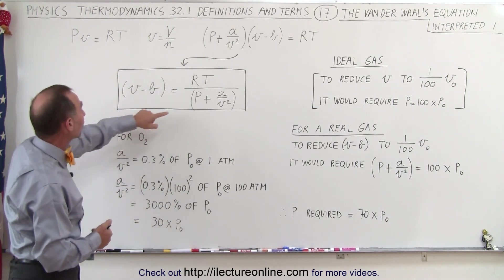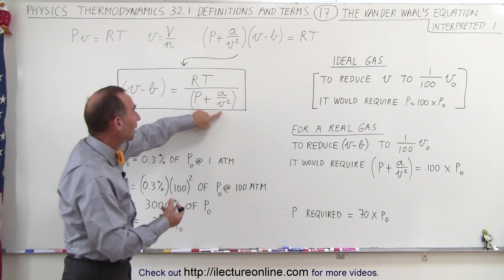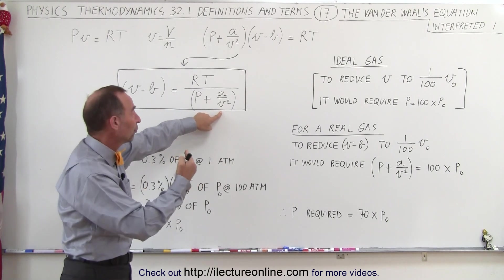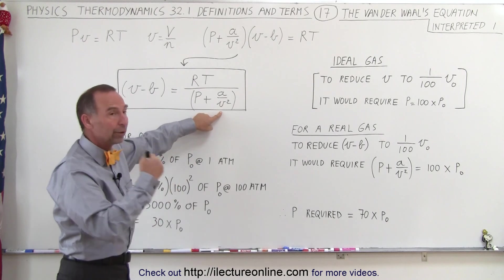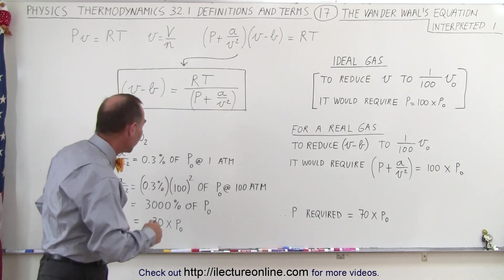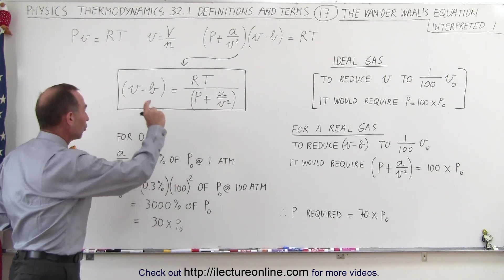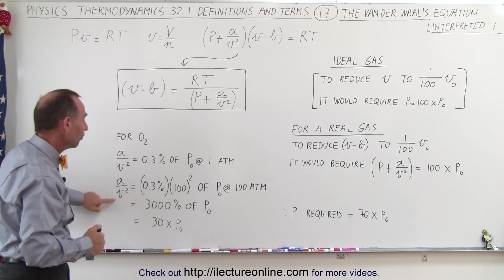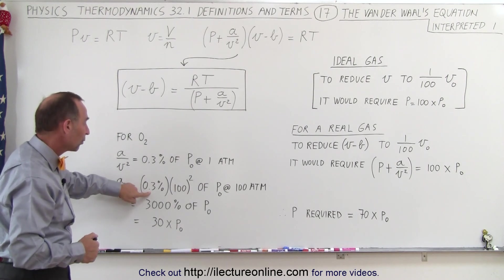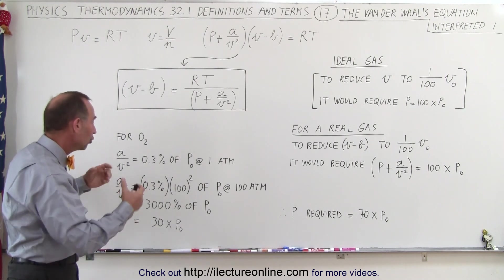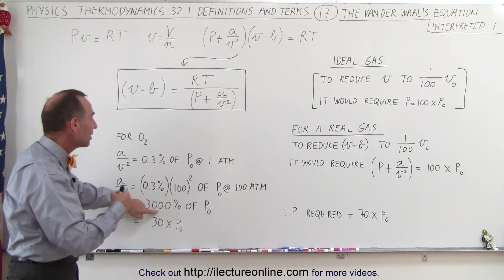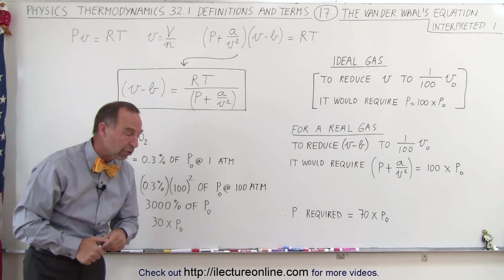But if we're now going to increase the pressure to 100 times the original pressure, then what we need to realize is that a/v² is 0.3% times 100 squared. Why 100 squared? Because this quantity, a/v², depends upon the volume squared. And if we reduce the volume to one-hundredth, one-hundredth squared is 1/10,000, and so that term now becomes larger by a quantity of 10,000 over the original value. So instead of 0.3% of the total pressure, it now accounts for 3,000% of that original pressure.